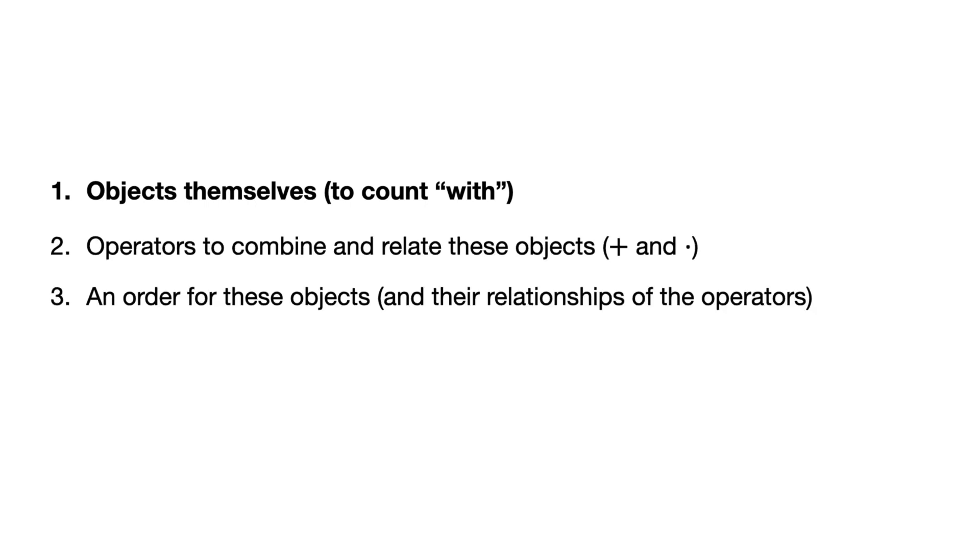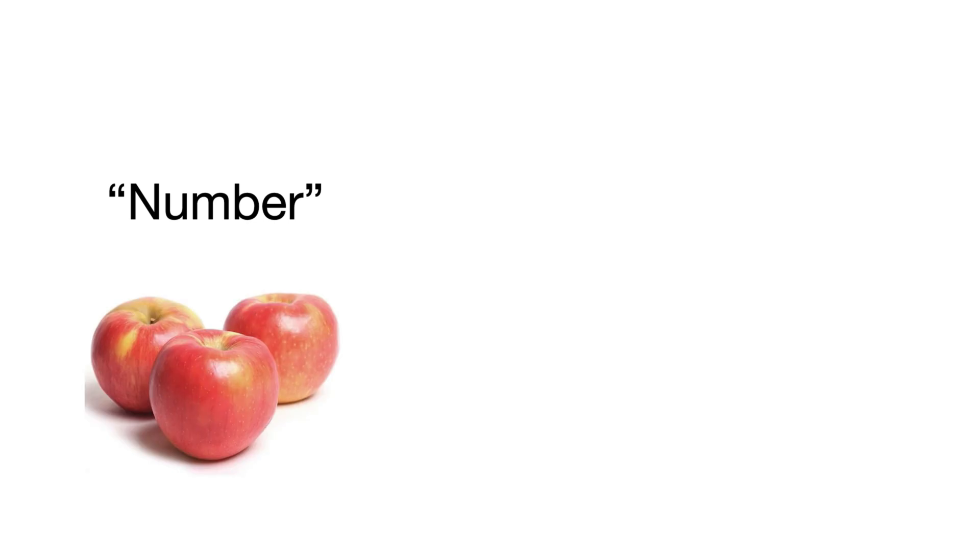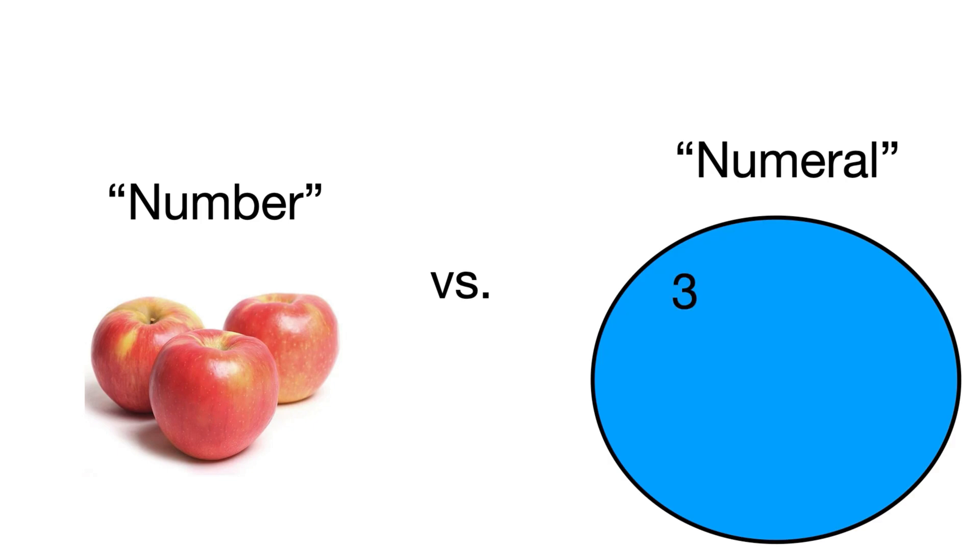So let's start with this first part, the objects themselves. This is arguably the most difficult piece. What the heck are these objects? And to get started, we need to make a distinction between a number itself and the object or symbol we use to represent it, which is often called the numeral. So the numerals can include things like the Arabic numeral three, the English word three, and three tally marks. Each of these all refer to the same number, the same mathematical object, they're just different ways of representing it. So let's not get confused between how a number is represented and what the number itself actually is.